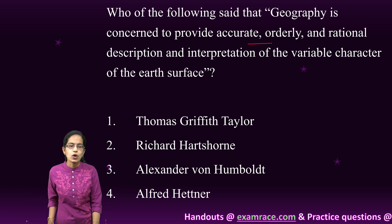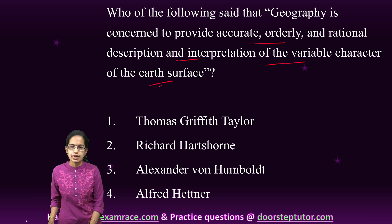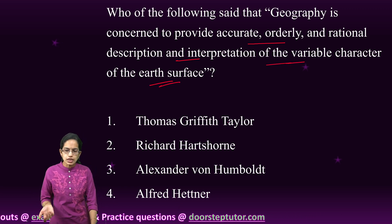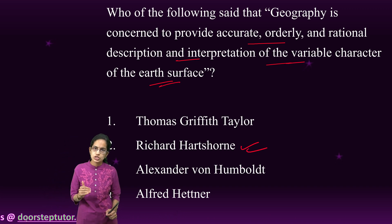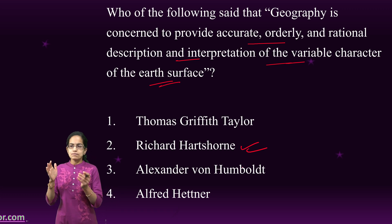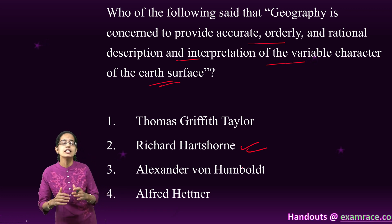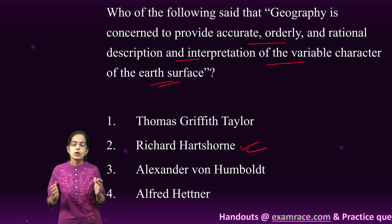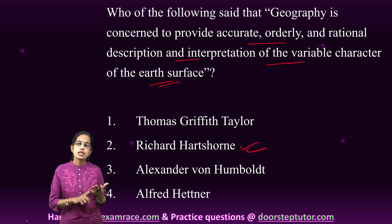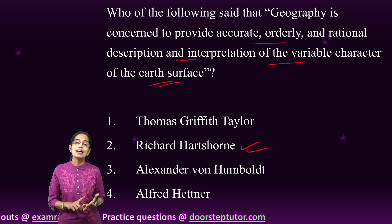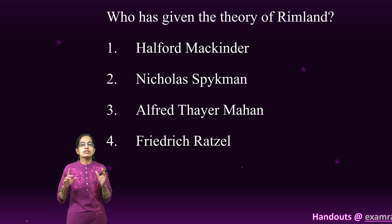The next question asks: who said geography is concerned with accurate, orderly and rational description and interpretation of the variable characteristics of the Earth's surface? The correct answer is Richard Hartshorne. In his book Perspectives on the Nature of Geography, he explained about the variable characters of the Earth's surface. His works mainly related to economic and political geography and the basic philosophical construct of geography.